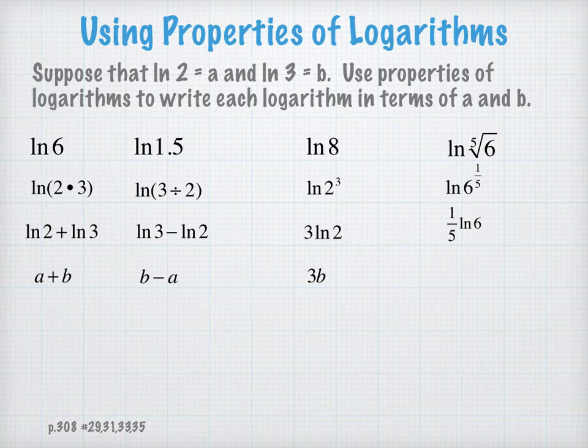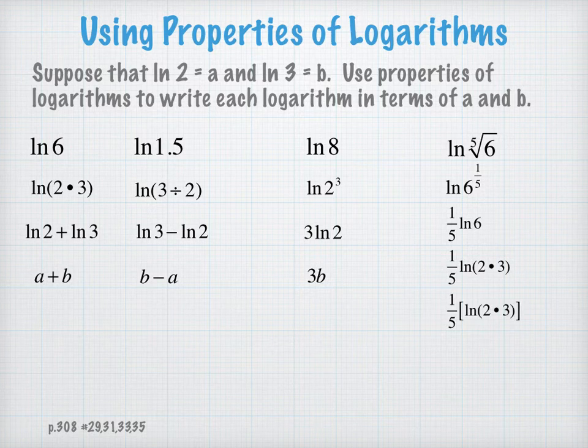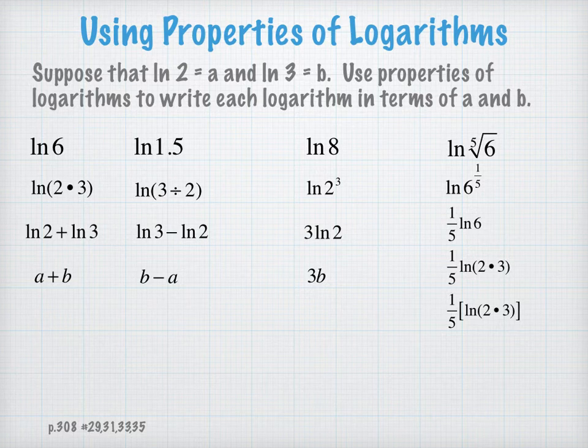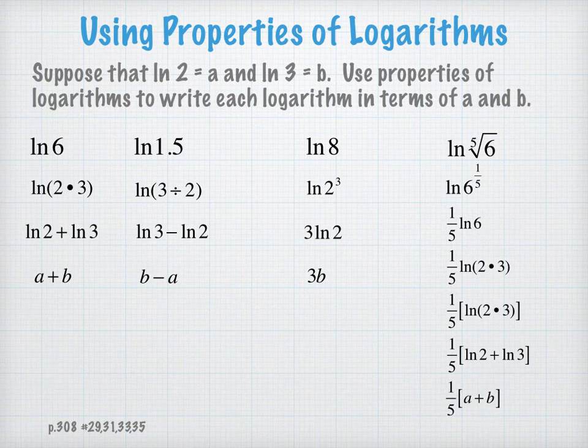Now, I already had an expression for the natural log of 6. It was my first example, and I'll just go through the steps of what I had done there. Remembering that one-fifth is really being multiplied to this product. Therefore, I have to distribute one-fifth to natural log of 2 plus natural log of 3. My final answer looks like this. I also could have represented it as one-fifth a plus one-fifth b.